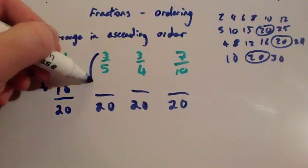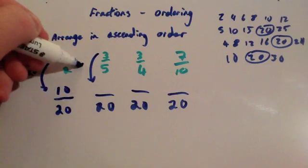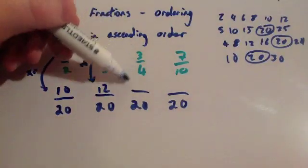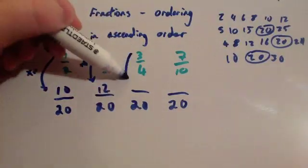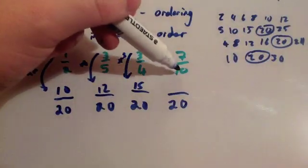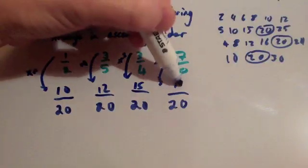To get from 5 to 20, you would times by 4. So you're going to times the 3 by 4, which is 12. And to get from 4 to 20, you'd times by 5. So you're going to need to times that by 5, so you're going to get 15. And to get from 10 to 20, you would times by 2. So you'd times the 7 by 2, which is 14.